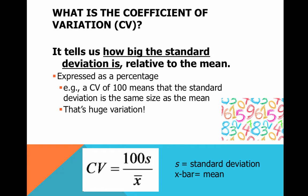A coefficient of variation equal to 100 means the standard deviation is the exact same size as the mean, because standard deviation over X-bar of 1 over 1 equals 100. So if the mean is 50 and the standard deviation is 50, that's really huge variability. One thing we've had trouble doing up to this point is comparing multiple groups and data sets to say which has more or less variability. The higher the number, the higher the variability.